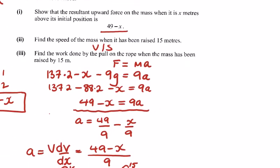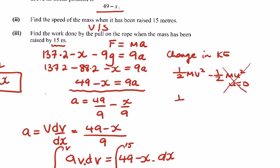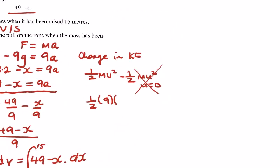The work done by the pull on the rope when the mass has been raised by 15. Well, work done is a change in kinetic energy. So 1/2 mv squared minus 1/2 mu squared. Started from rest, u equals 0, so that's all 0. So 1/2 m, which is 9, times v, which was 11.76, squared. This is giving me 622.339, and just double-checked without rounding it would give me 622.5 for the end of this question.